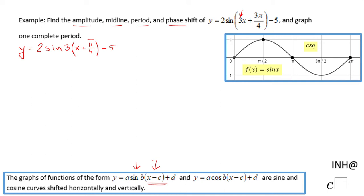Now this equation matches the standard form and we can identify the parameters. The amplitude is two — that's the number in front of the sine function. The midline is y equals negative five, which is a horizontal line.